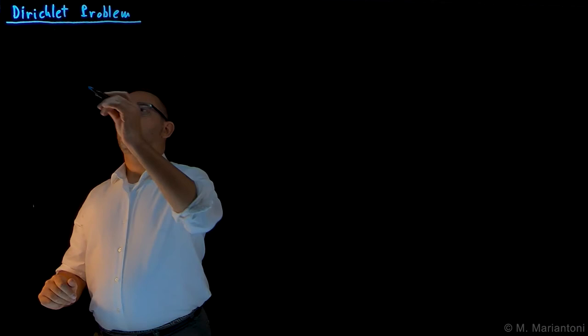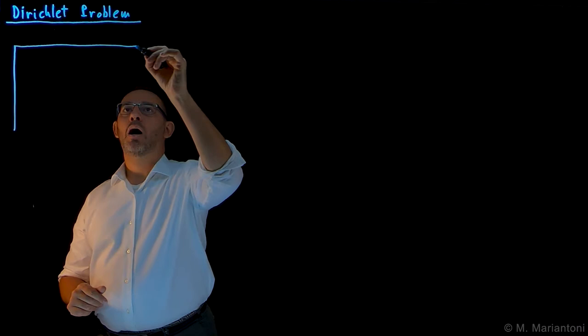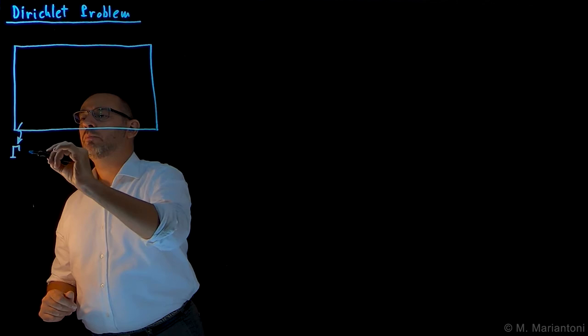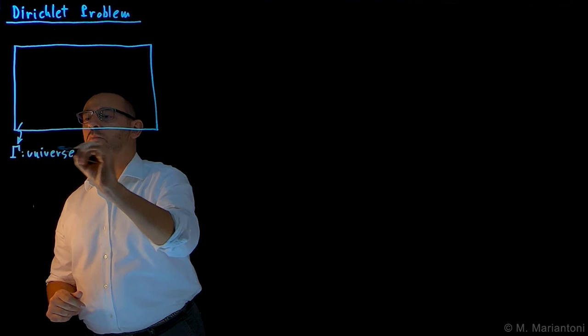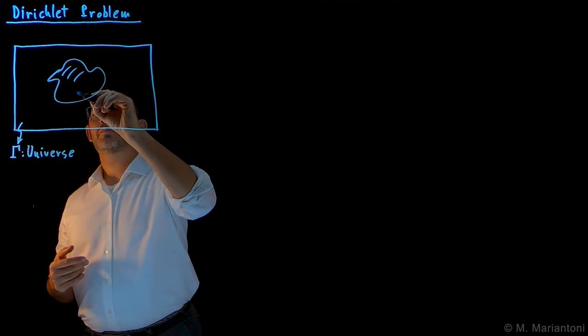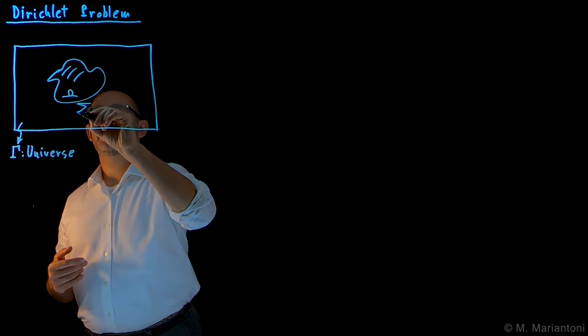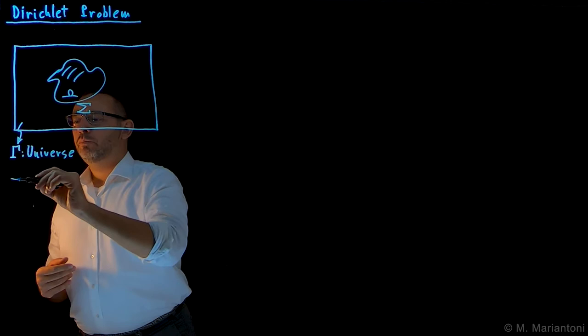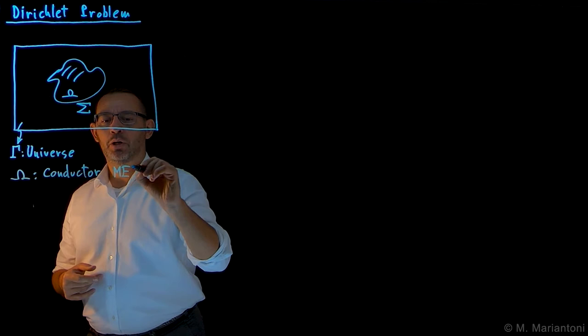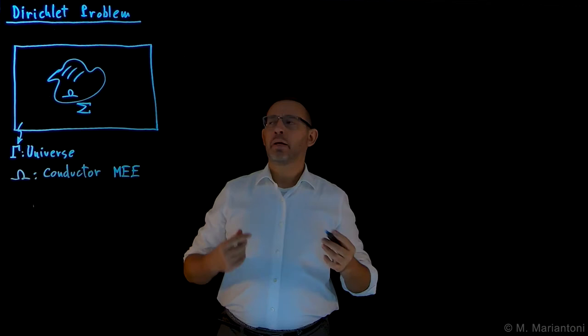Let us consider a universe enclosed within a box, which I present here in two dimensions. This is my universe, capital Γ. Within this universe, I consider a conducting material which we call capital Ω, characterized by an external surface capital Σ. This conducting material Ω is a perfect conductor in macroscopic electrostatic equilibrium conditions — that is, there is no volume charge within this object. There could be a surface charge with density σ on capital Σ, on the surface of this object.